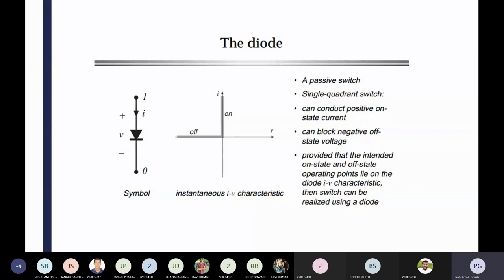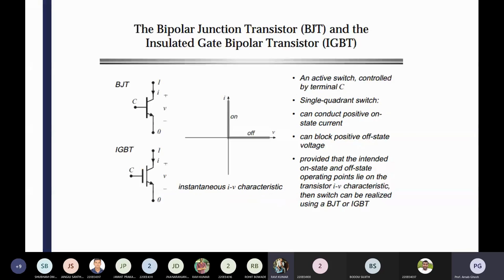Then you can see the BJT and IGBT operations, where you can see different — it's an active switch because you can see the controlling unit, that current controlling unit, is already there. That portion I have already discussed in my last two classes. I'm just going to recap because there is a two-day gap. Also, in my last class — last Thursday's class — that recording was not done because some problem occurred in the system and there were network issues.